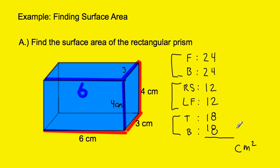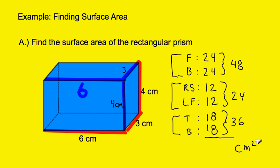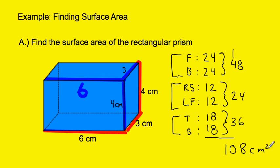Now I'm going to add them all up: 24 plus 24 plus 12 plus 12 plus 18 plus 18. It helps to combine these first into 48, then 24, and then 18 plus 18 is 36. Eight plus four is 12, plus six is 18. Then one plus four is five, plus two is seven, plus three more is 10. For a total of 108 — and that's 108 square centimeters. Notice how the little exponent goes after the measure and not after the number: it's 108 centimeters squared, not 108 squared centimeters.